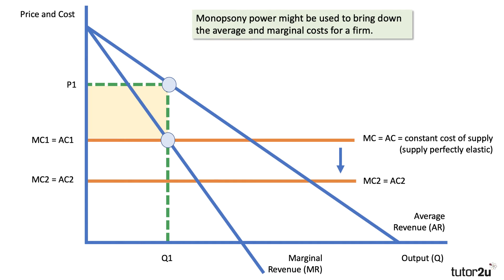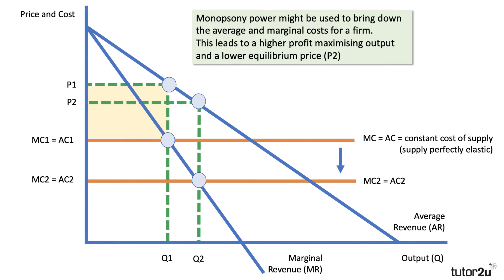The bargaining power with suppliers has helped to bring down the unit cost of supply. Now, assuming the revenue curves stay the same, this leads to a higher equilibrium profit-maximizing output of Q2, and the price falls from P1 to P2. So monopsony power in theory brings prices down, but also has a consequence for profits because costs are lower.